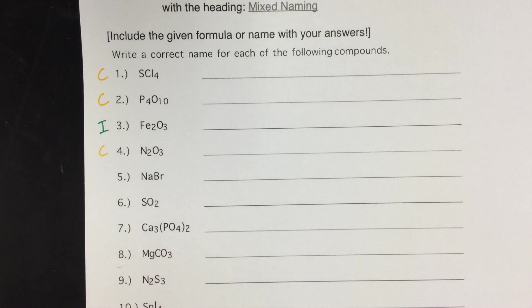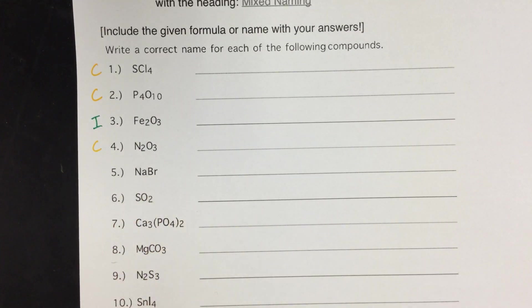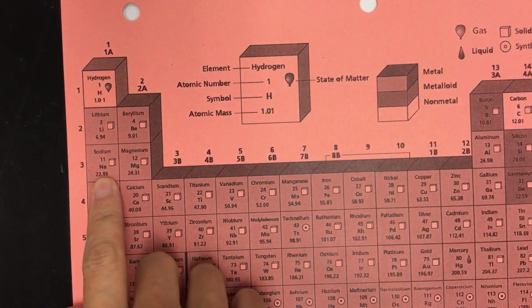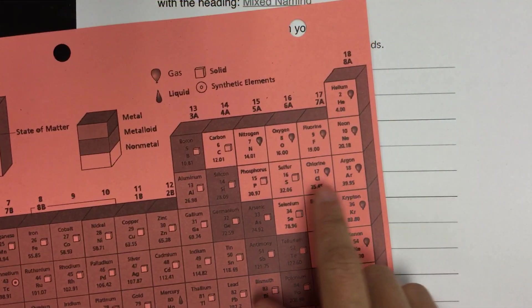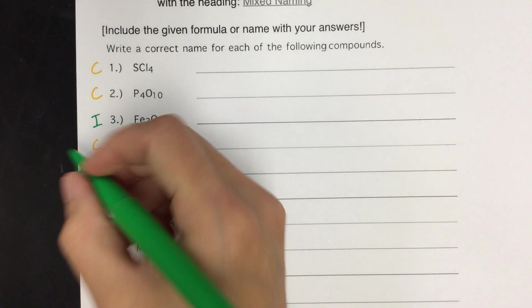Number five is sodium and bromine. So sodium's here, it's a metal. Bromine's here, it's a non-metal. So that's an ionic compound.